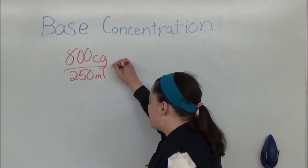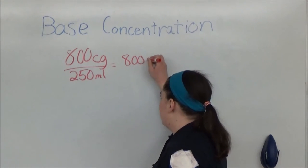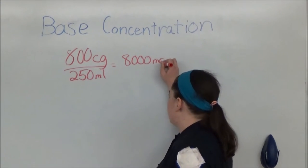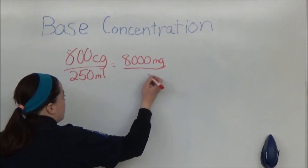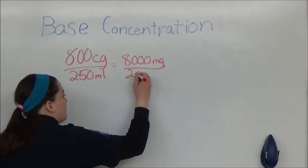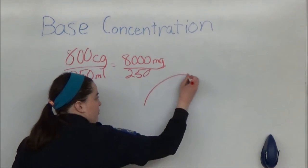So 800 centigrams is equal to 8,000 milligrams. And 250 milliliters stays 250 milliliters. Next, draw your umbrella.